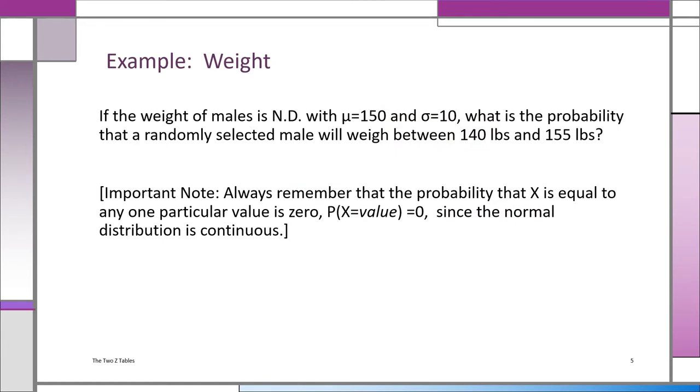For example, if I tell you the weight of adult men is normally distributed with a mean of 150 pounds and a sigma of 10 pounds, what's the probability that a randomly selected male will weigh between 140 and 155 pounds? We'd never ask you what is the probability that a man weighs exactly 150 pounds, because technically the answer is zero. Nobody on planet Earth weighs exactly 150 pounds. This is a continuous measurement. 150 pounds means 150 with 8 million zeros after it. So we never ask that kind of question. But we might ask between 140 and 155. That's an interval.